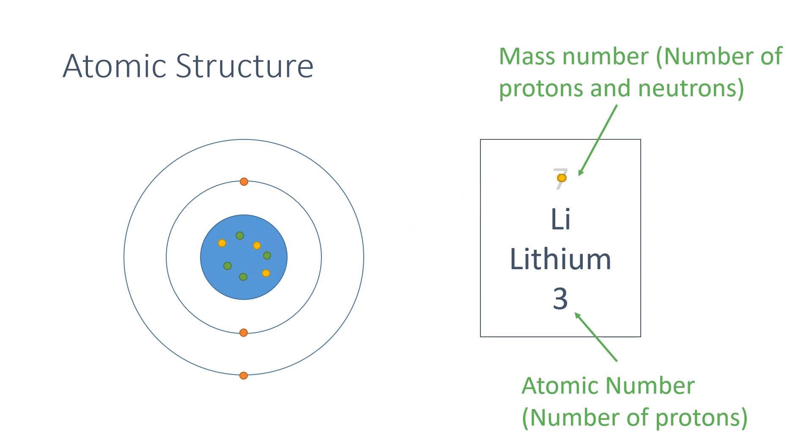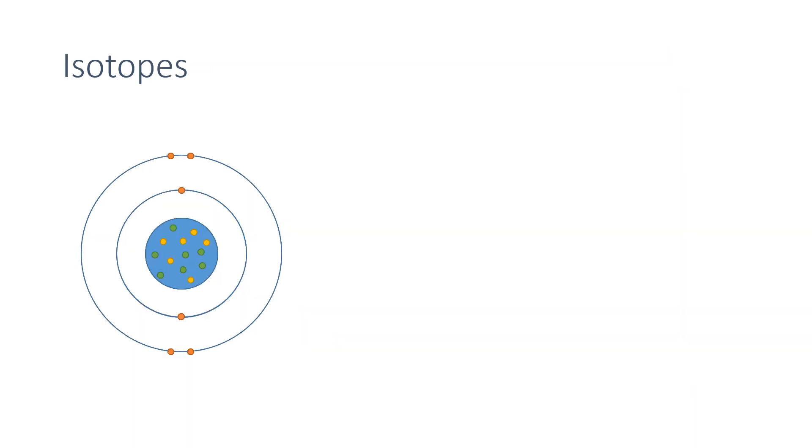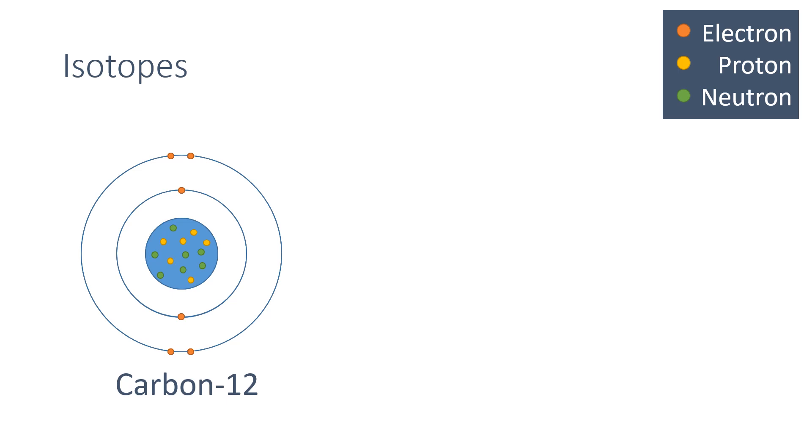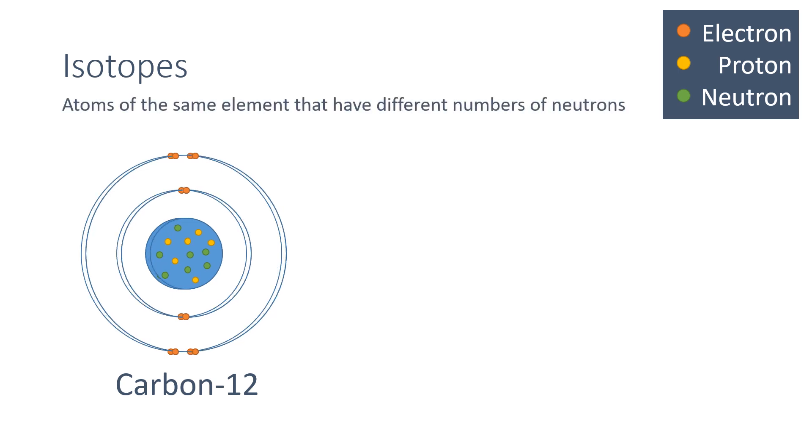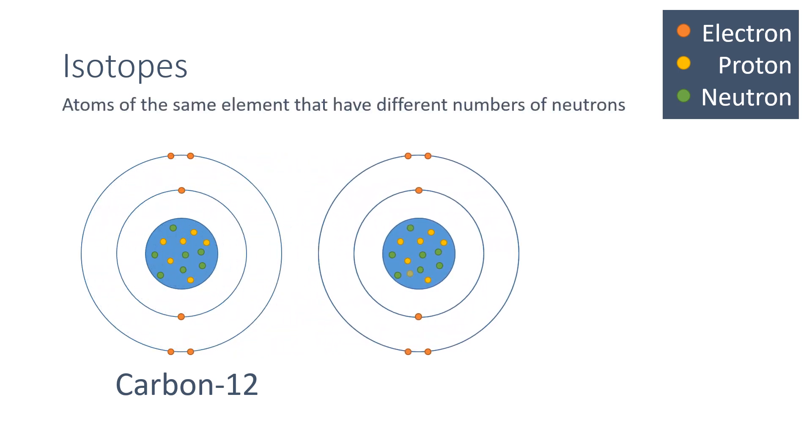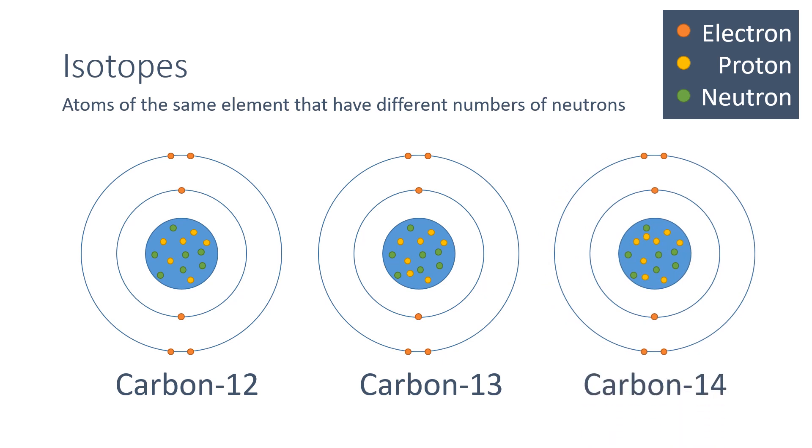Atoms of the same element that have different numbers of neutrons are called isotopes. Carbon is commonly found as carbon-12 with 6 protons and 6 neutrons. However, by increasing the number of neutrons to 7, you can produce carbon-13. Another commonly formed isotope of carbon is carbon-14, which has an additional 2 neutrons compared to carbon-12.